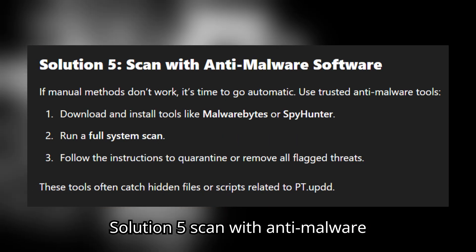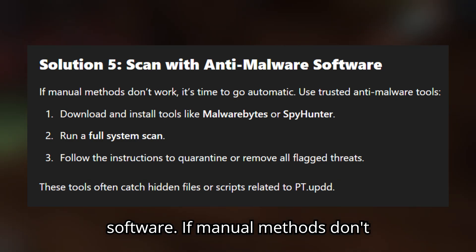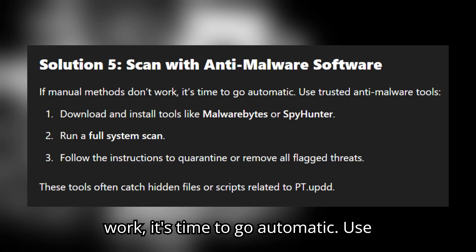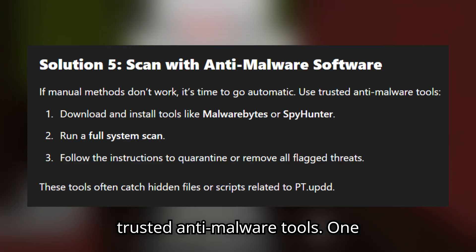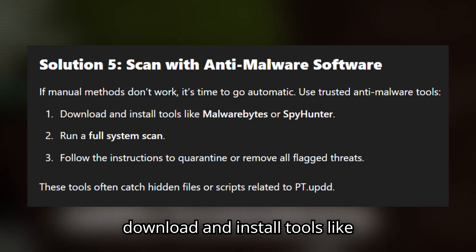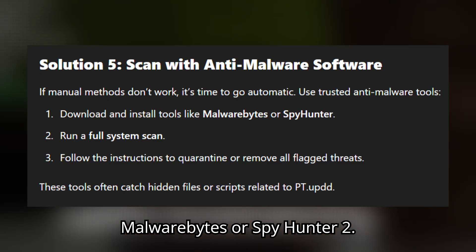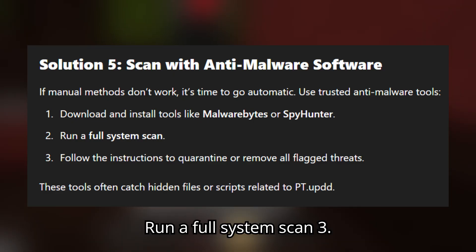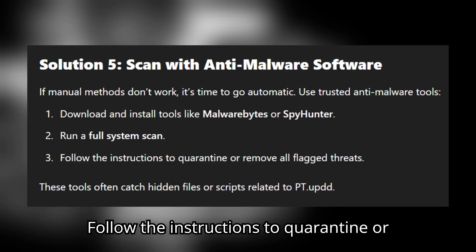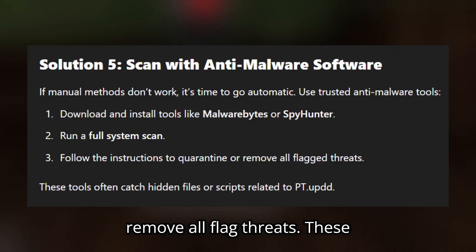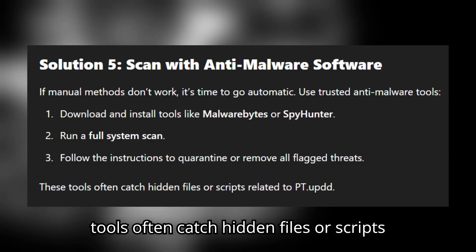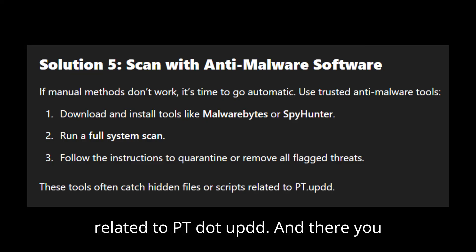Solution 5: Scan with anti-malware software. If manual methods don't work, it's time to go automatic. Use trusted anti-malware tools — download and install tools like Malwarebytes or SpyHunter. Run a full system scan, then follow the instructions to quarantine or remove all flagged threats. These tools often catch hidden files or scripts related to pt.updd.